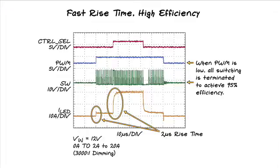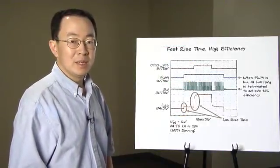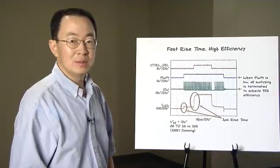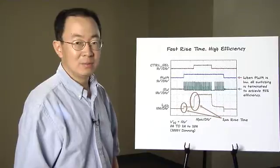Competitors' parts will have a few hundred milliseconds transition time between two non-zero currents. When PWM is low, all switching is terminated and all output caps are disconnected from the circuit.